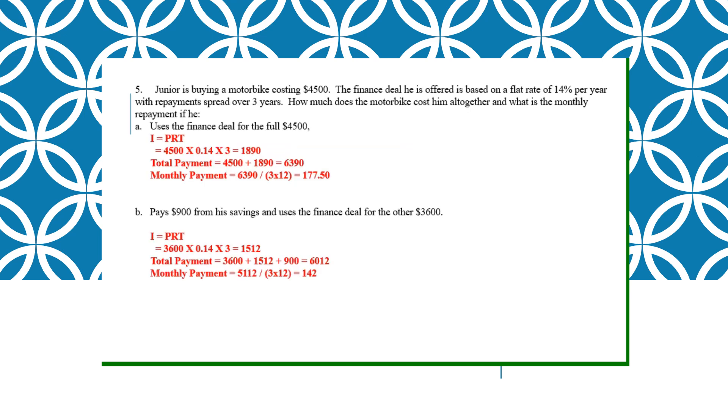Junior is buying a motorbike costing $4,500. Now the moment you see flat rate, this is what I want you to see. What is flat rate? Simple interest. Buying a car, buying a bike, buying flat rate is simple interest. So for full $4,500, I equals to PRT. Your principal $4,500, 14% times 3 is your simple interest formula. Total payment, then you divide with the total number of months. This is what you will get.